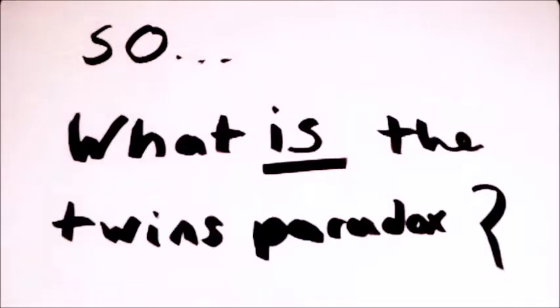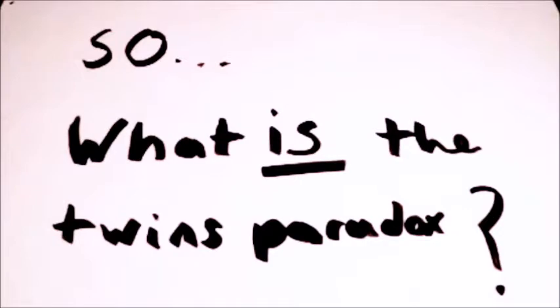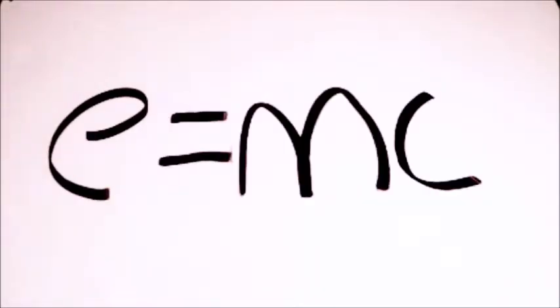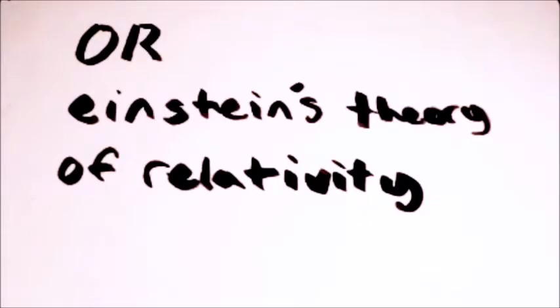So, what is the twins paradox? It's basically E equals mc squared, or Einstein's theory of relativity.